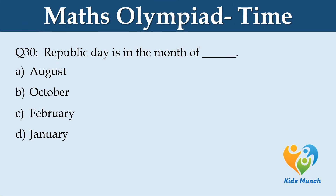Republic Day is in the month of dash. Option A: August. Option B: October. Option C: February. Option D: January.